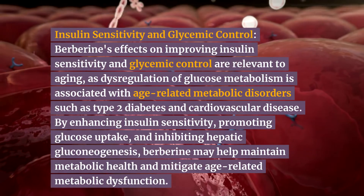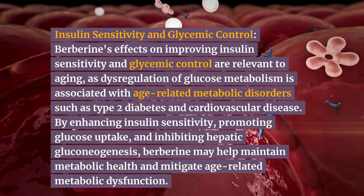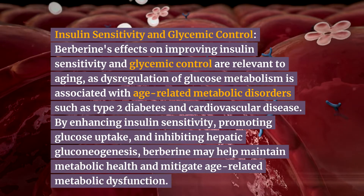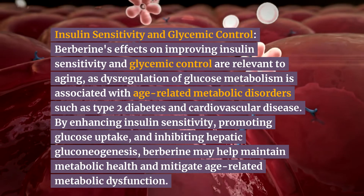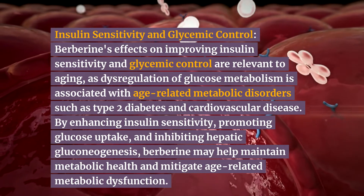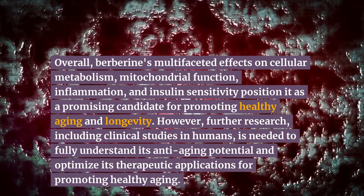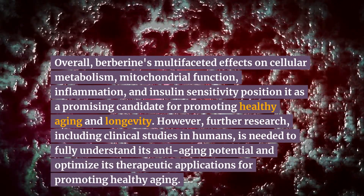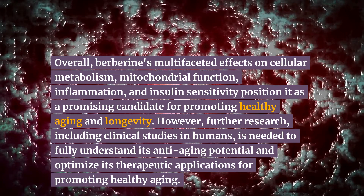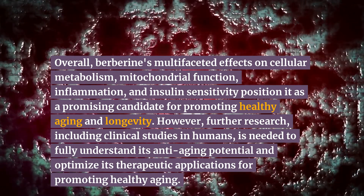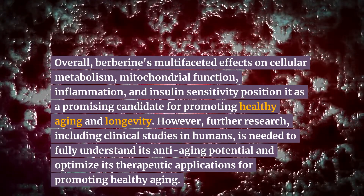Insulin Sensitivity and Glycemic Control: Berberine's effects on improving insulin sensitivity and glycemic control are relevant to aging, as dysregulation of glucose metabolism is associated with age-related metabolic disorders such as type 2 diabetes and cardiovascular disease. By enhancing insulin sensitivity, promoting glucose uptake, and inhibiting hepatic gluconeogenesis, berberine may help maintain metabolic health and mitigate age-related metabolic dysfunction. Overall, berberine's multifaceted effects on cellular metabolism, mitochondrial function, inflammation, and insulin sensitivity position it as a promising candidate for promoting healthy aging and longevity. However, further research, including clinical studies in humans, is needed to fully understand its anti-aging potential.